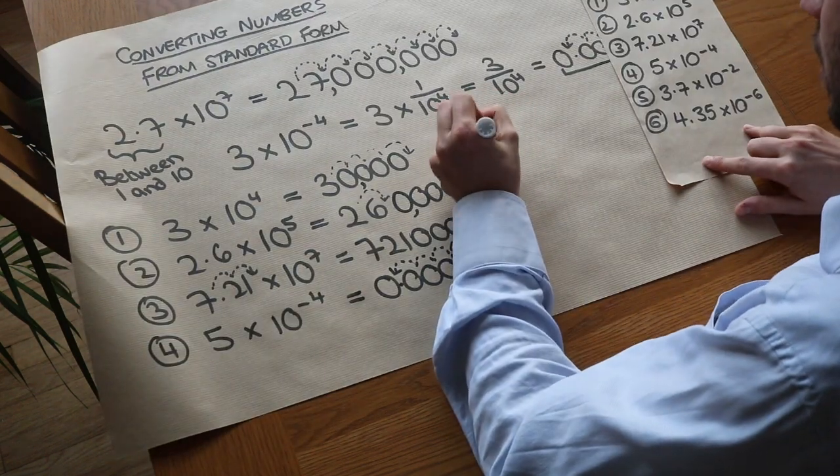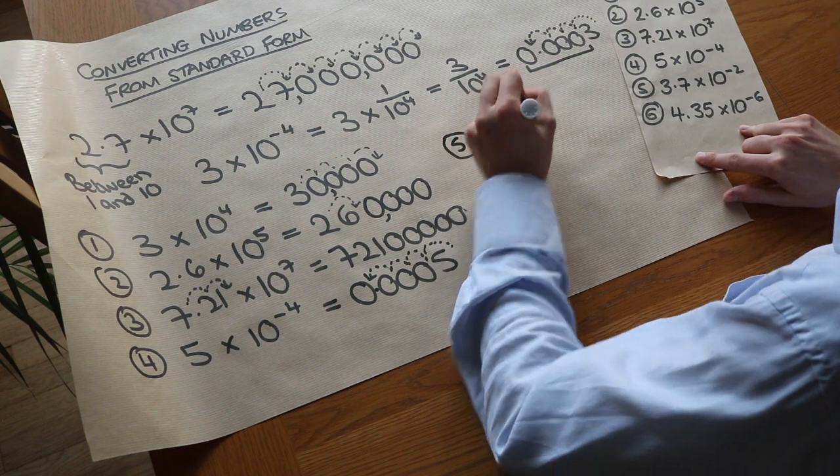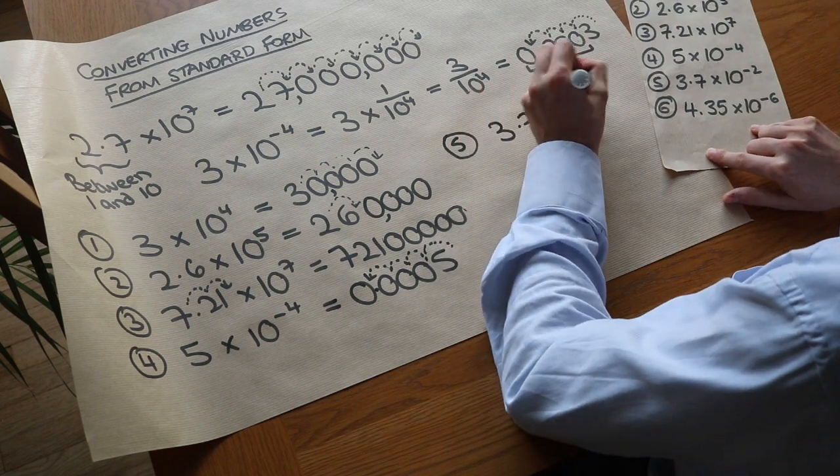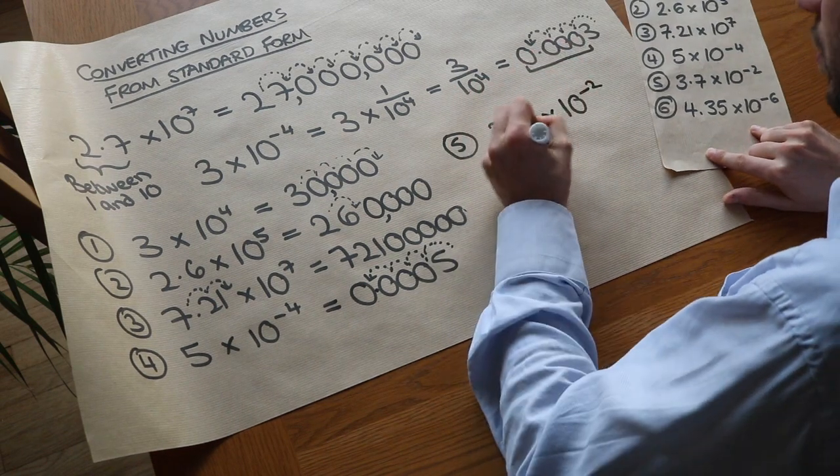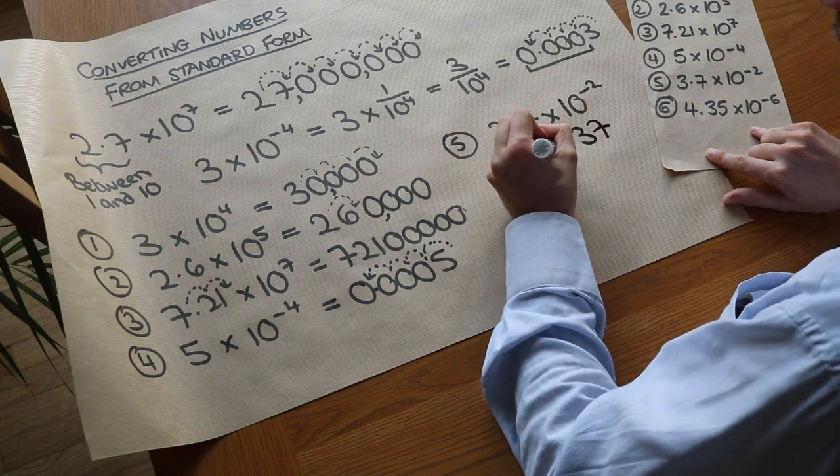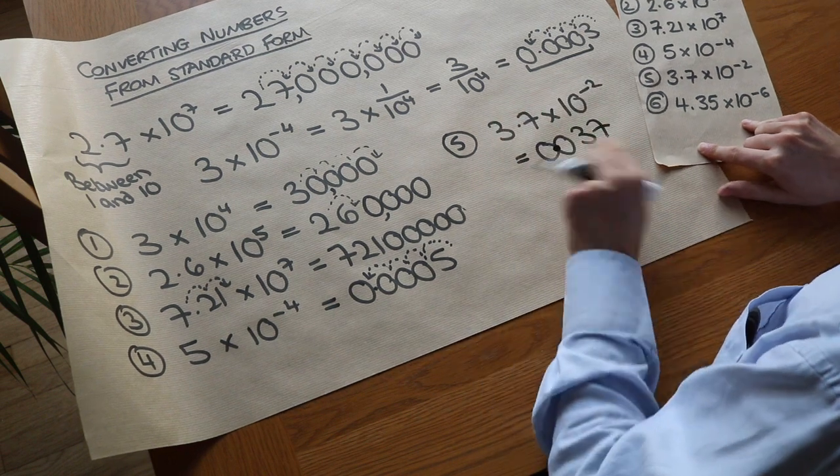What about question five? We've got 3.7 times 10 to the power of minus 2. If you use my little trick we have two zeros on the front, then 3, 7, and put the decimal point here.